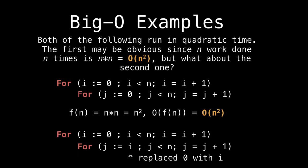So our second example is two algorithms that run in quadratic time. So the first one seems obvious, we do n work n times. So n times n is Big O of n squared. But observe the second one, I changed the zero with an i. So pause the video and try to figure out maybe why that's Big O of n squared.